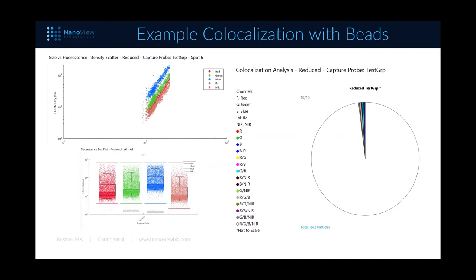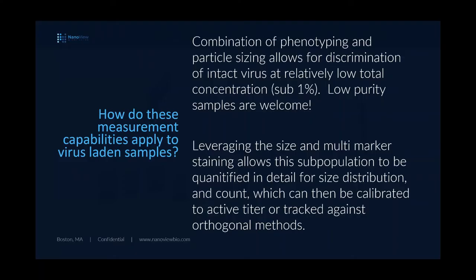With the beads positive for everything, virtually all 842 individual single nanoparticles measured showed positive for all four markers — only the phenotype positive for all four appears in the pie chart. That combination of phenotyping and particle sizing allows discrimination of intact virus at relatively low concentration, even compared to EVs, so low-purity samples are welcome. Leveraging size and multi-marker staining allows subpopulations — fragments, fulls, and empties — to be quantified in detail for size distribution and count, which can be calibrated to active titer or tracked against orthogonal methods.